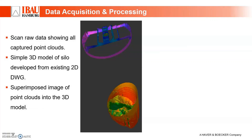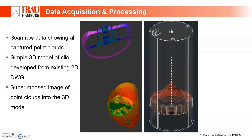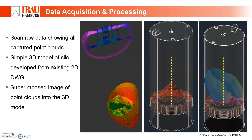Back in the office, we extract the data from the scanner and process it using 3D software to produce the required outcomes. The first picture shows the raw data — the point cloud of the silo internal. The silo wall has been deleted for presentation purposes so you can see what's inside. For this case study, the customer provided us with the silo civil drawings, so we could develop a simple 3D model with AutoCAD. The last picture shows the point cloud superimposed into the 3D model, so we can see the actual silo condition with reference to the real scale.